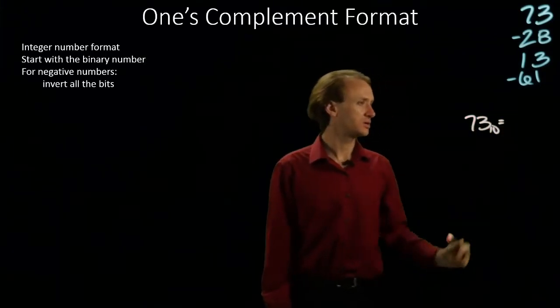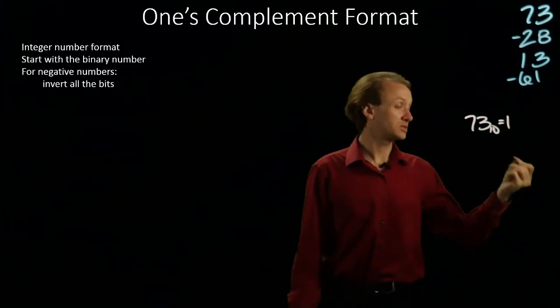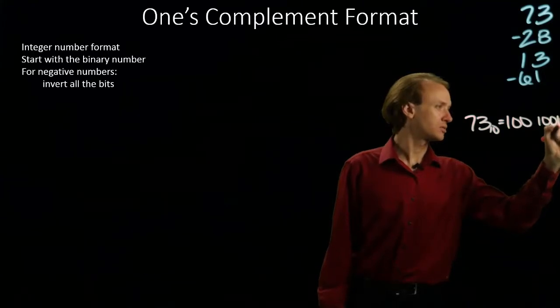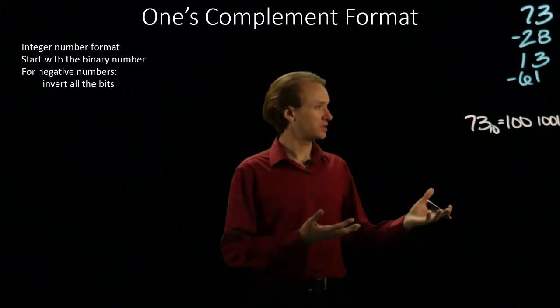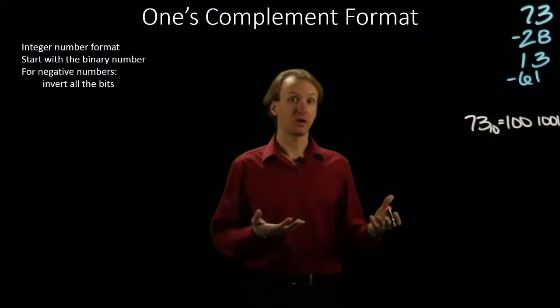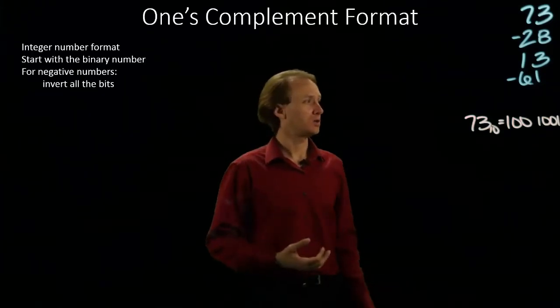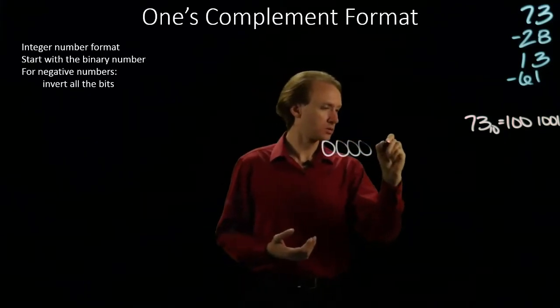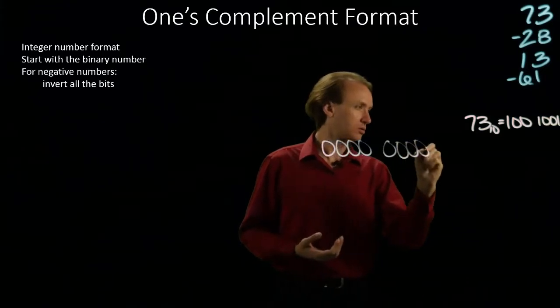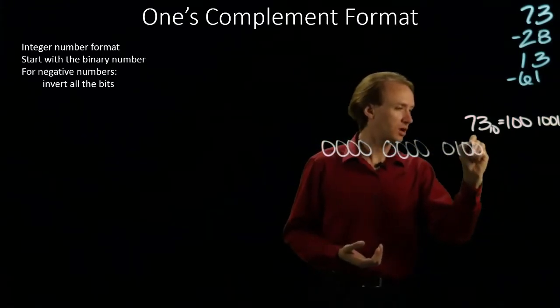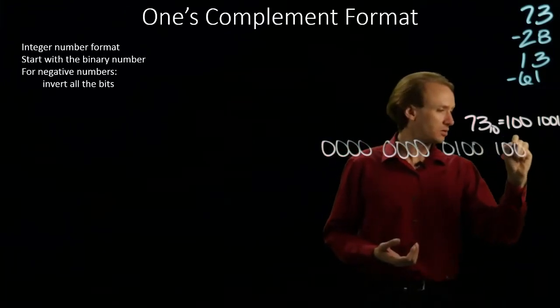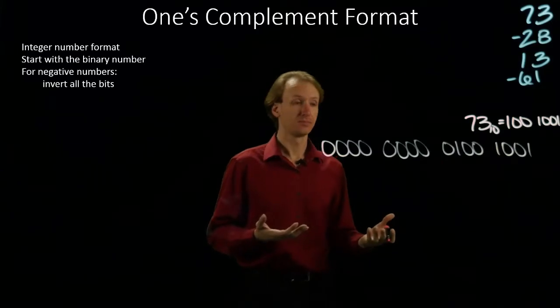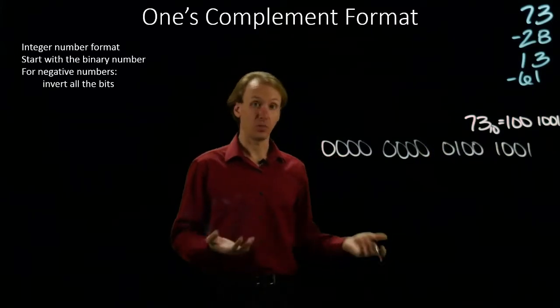So, 73 in decimal is 64 plus 9 in binary. And this is a positive number. So, for my positive number, I'm just going to write down my number in 16 bits. I have one more leading zero than I would have with the sign and magnitude format. But the result actually comes out looking the same. And this is 73 in the one's complement format.